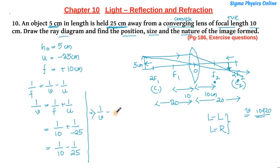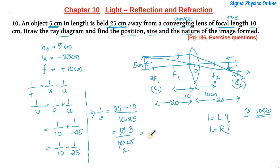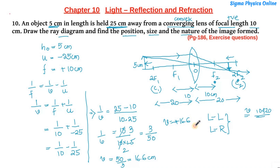Taking the LCM of 10 and 25 — do not multiply it out in the exam as it wastes time — we get 1/v = (25 minus 10) / (10 × 25) = 15 / (10 × 25). Simplifying: 5 divides into 15 giving 3, and 5 divides into 10 giving 2, so 1/v = 3/50. Therefore v = 50/3, which is 16.6 centimeter with a plus sign. The positive sign indicates the image is to the right of the optical center.